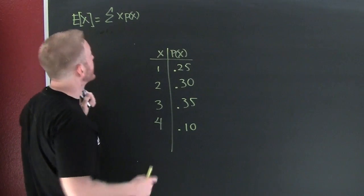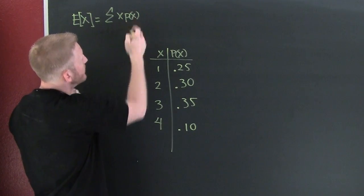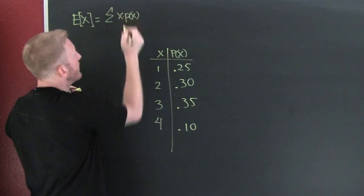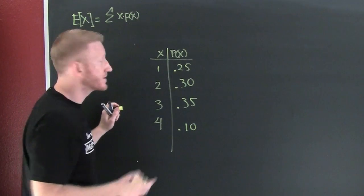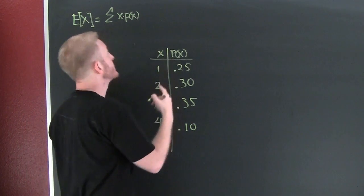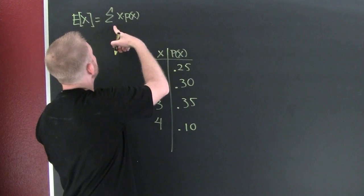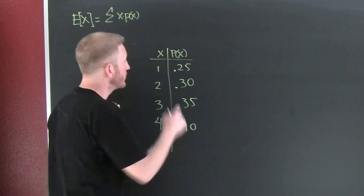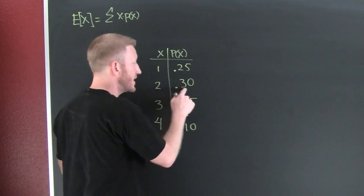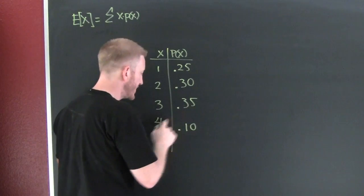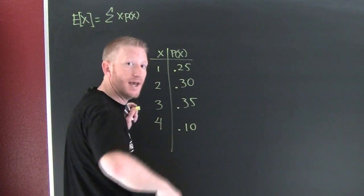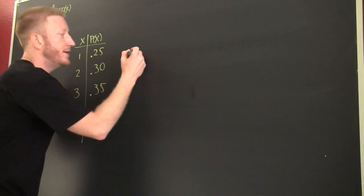The expected value of a probability distribution is the sum of x*p(x). This is also the average of that probability distribution. In order to find this expected value, we're going to go through and take this one times that one, plus this one times that one, plus this one times that one, plus this one times that one.